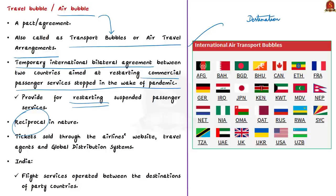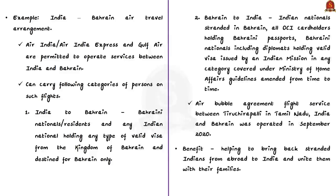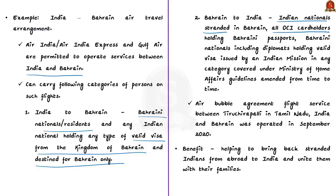For example, India created an air travel arrangement with Bahrain, permitting Air India, Air India Express, and Gulf Air to operate services between the two countries for certain categories of persons. From India to Bahrain, airlines may carry Bahraini nationals or residents and Indian nationals holding a valid Bahraini visa destined for Bahrain only. Reciprocally, from Bahrain to India, airlines can carry stranded Indian nationals and OCI cardholders with Bahraini passports. A flight between Tiruchirappalli, Tamil Nadu, and Bahrain was operated in September 2020 under this arrangement.